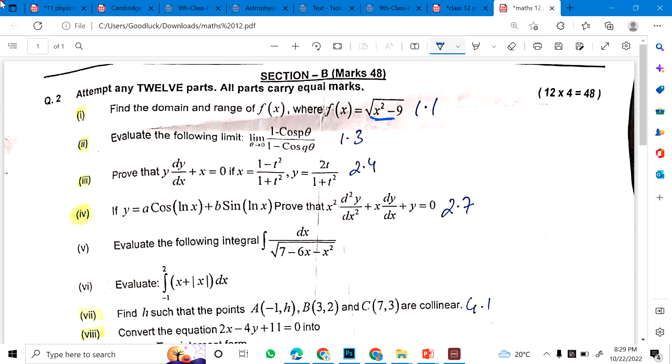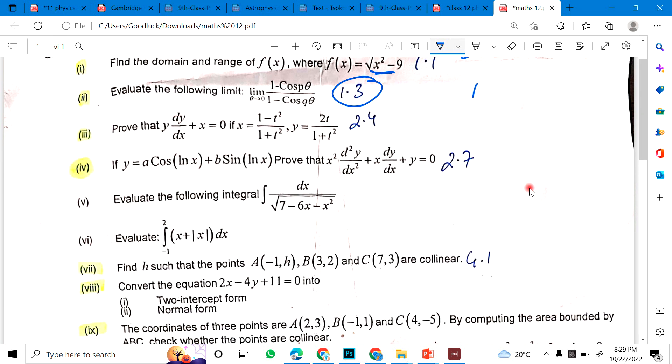First question is find the domain and range of this function. Then evaluate the following: 1 minus cos p theta over 1 minus cos q theta, 1 minus cos x theta, 1 minus cos y theta. This can also be possible.